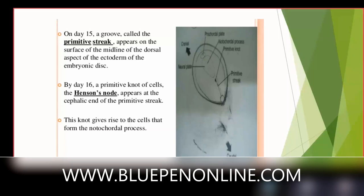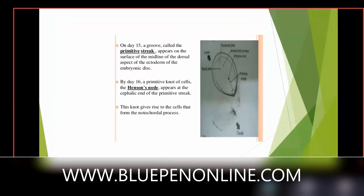The ectoderm is the outermost layer, then mesoderm, then endoderm. By day 16, Hensen's node appears at the cephalic end of the primitive streak. This knot gives rise to cells that form the notochordal process. The notochord is the undeveloped spinal cord of the human body — it is the framework forming for the developing embryo. In the womb, the embryo is always C-shaped with a prominent notochord.